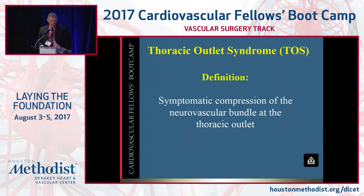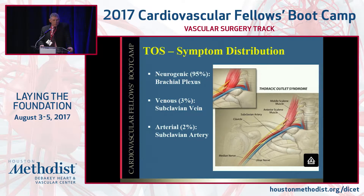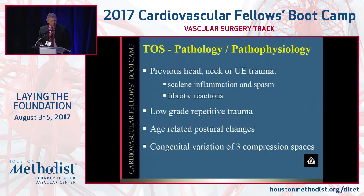Let's start with thoracic outlet syndrome, defined as compression of the neurovascular bundle at the thoracic outlet. It's very uncommon, typically affecting ages 25 to 40, and women are 4 to 1 greater than men. Symptom distribution is primarily neurogenic. Secondary is venous, and arterial runs far behind at 3% and 2% compared to 95% for the neurologic.